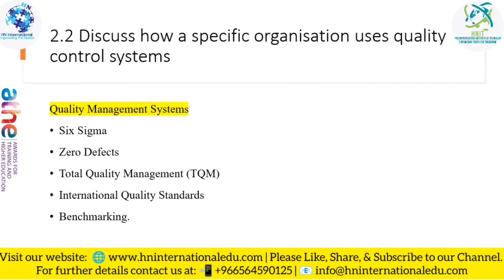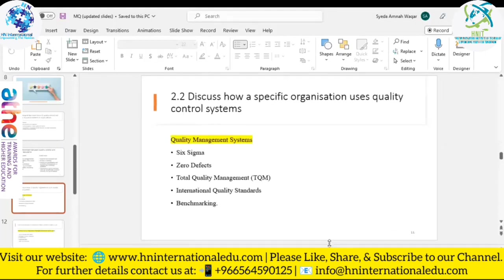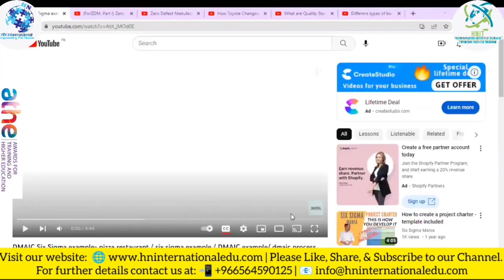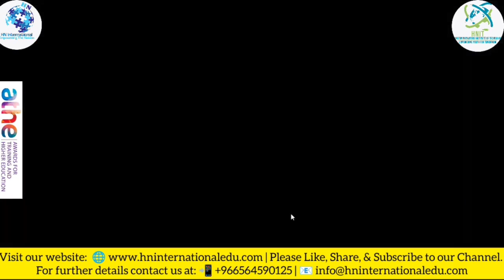Moving to Unit 2.2 — how specific organizations use quality control systems. The quality management systems we will discuss include Six Sigma, zero defects, TQM, international quality standards, and benchmarking. We will be watching videos on each of these.